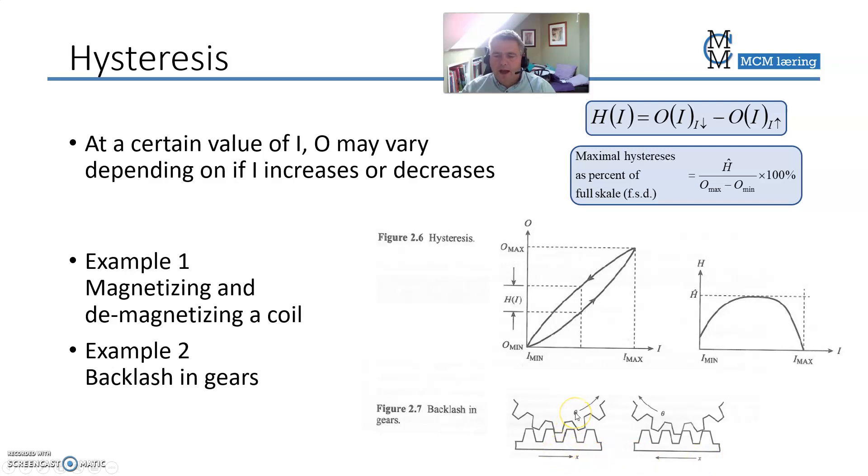Also, you have systems that are magnetized. For example, if you magnetize a lump of iron and try to demagnetize it again, it will have what is called a memory. So it will behave differently on the way up and way down again.